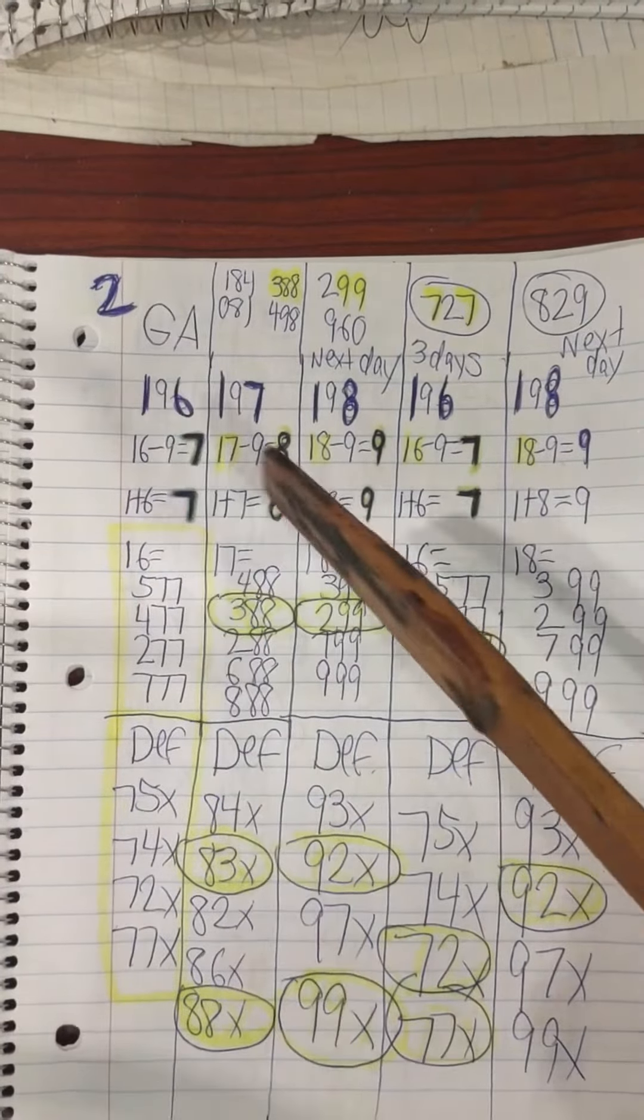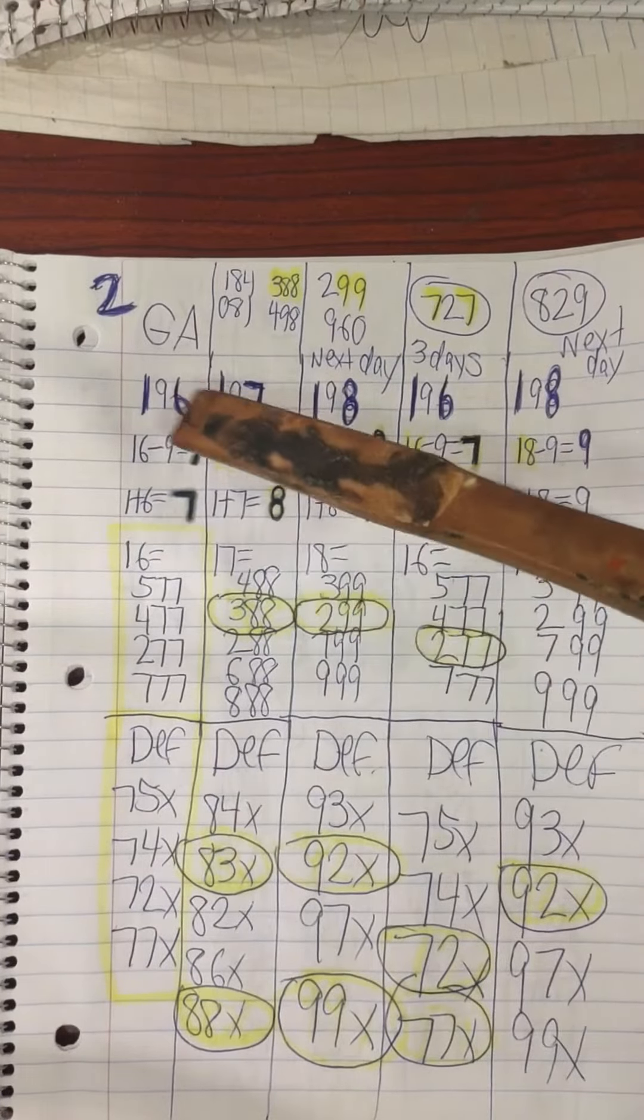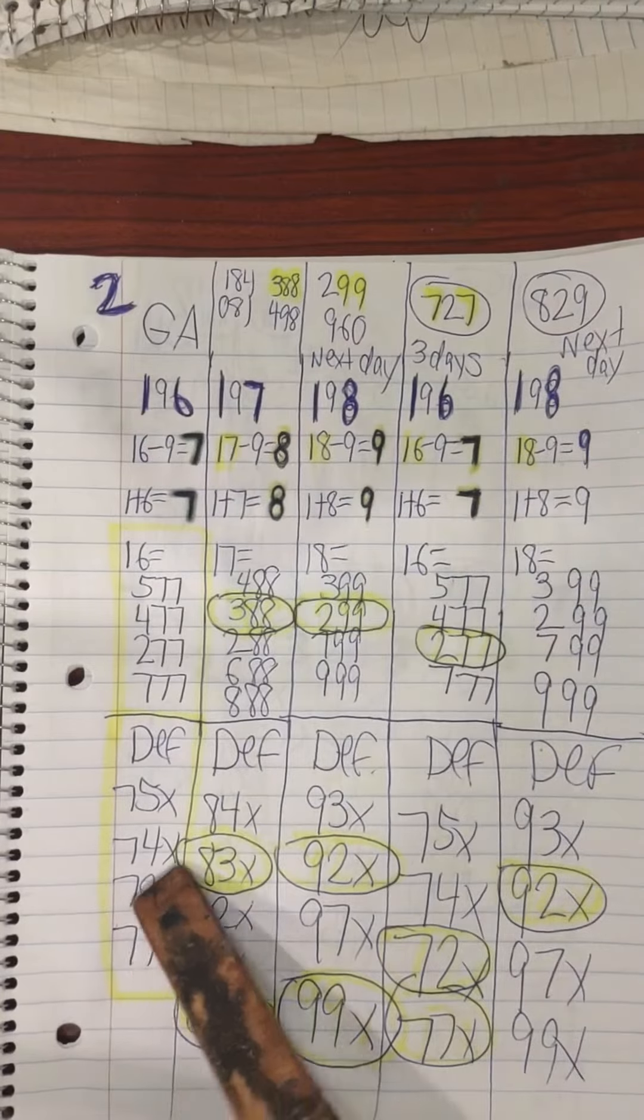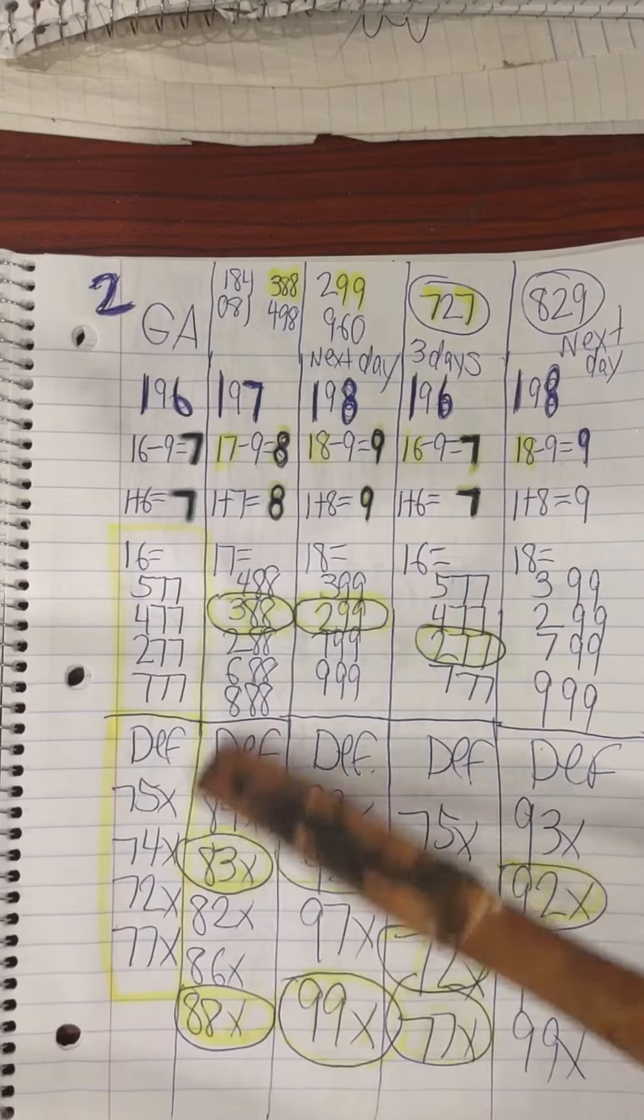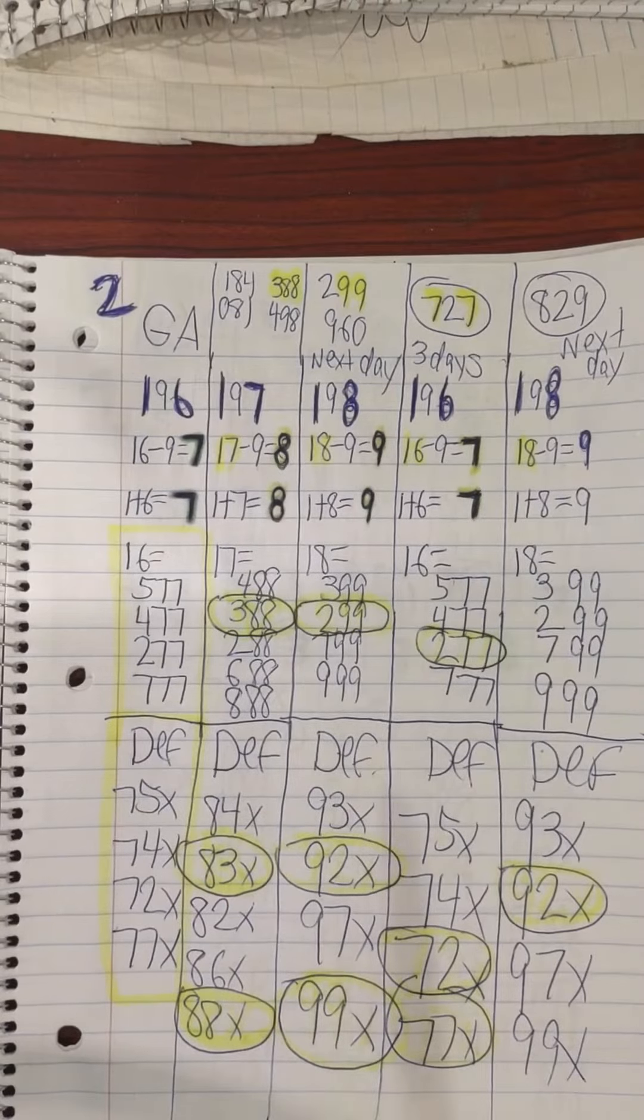1-9-6 can bring double sevens. And on the defensive side, if they don't bring the double sevens to Georgia, y'all will get one of these pairs: 7-5, 7-4, 7-2, and 7-7.